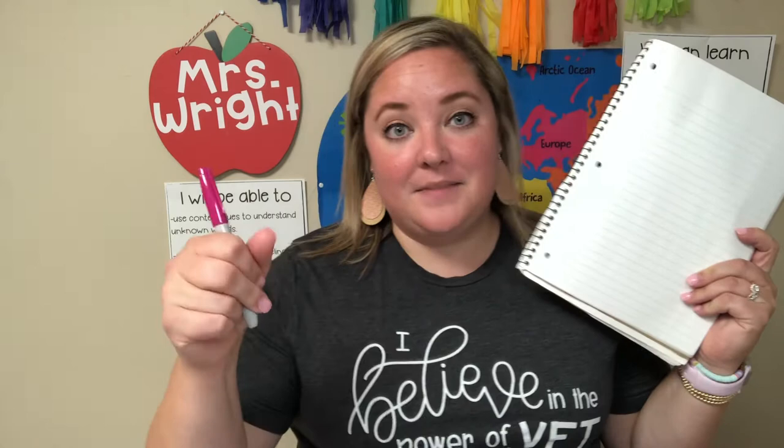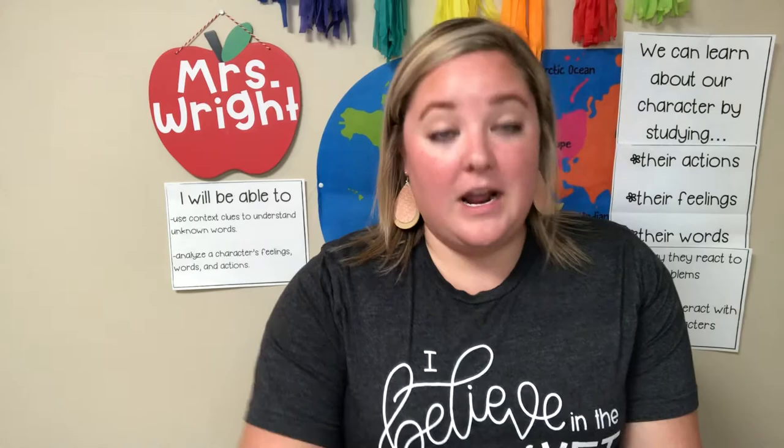So we're going to get started. I want you to go ahead and get something to write on and something to write with. We are just going to make a quick little chart of feelings and traits. You don't have to write this part, but hopefully we're going to write some later. You can write this if you want.